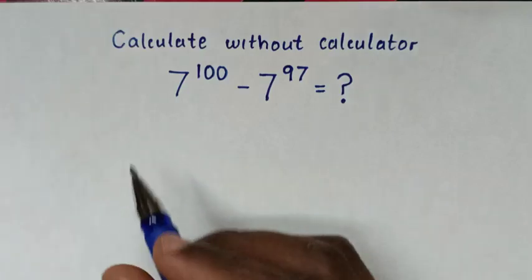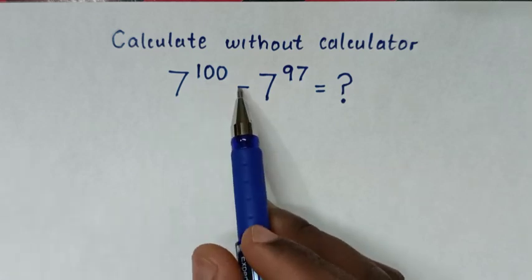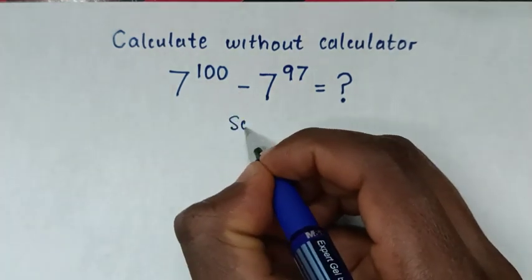Hello, how to calculate without calculator 7 power of 100 minus 7 power of 97. Solution.